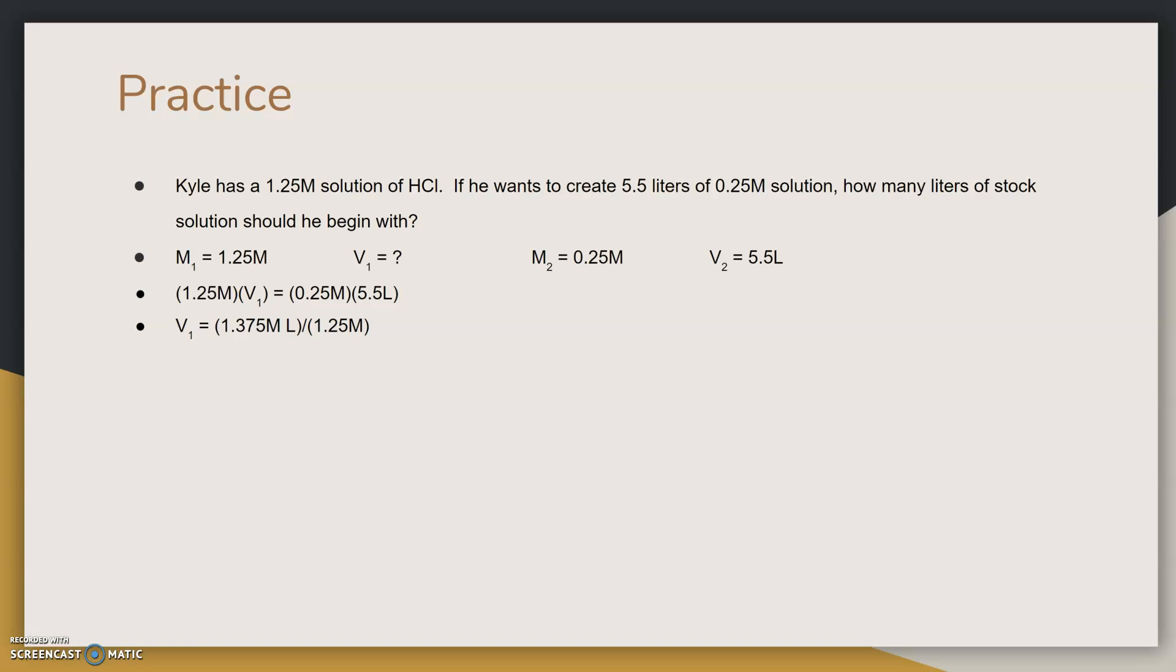The 1.25 on the left side cancels out, leaving only the 1.25 on the right side. So our resulting problem is 1.375 molarity liters divided by 1.25 molarity. Notice that I've already multiplied 0.25 times 5.5. This is where I obtained 1.375 molarity liters from.